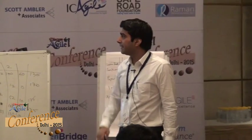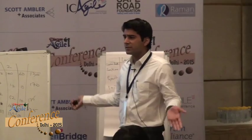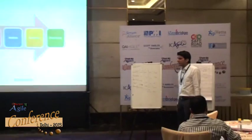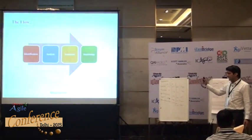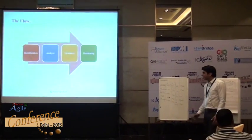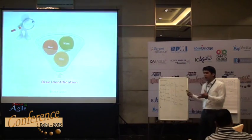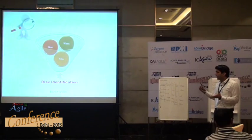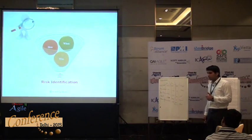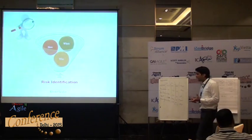This is the flow — the most simple flow in the world. We identify something, we analyze it, we treat it, and we monitor it. I kept it as in the traditional method and didn't play much with it. When it comes to the risk identification part, there are three things: when, how, and who. How do we identify risk? When do we identify risk? And who does that?